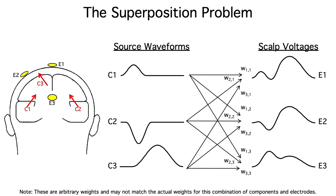As a result, the voltage at any given scalp electrode is simply a weighted sum of the underlying source waveforms. This superposition of multiple ERP components at each electrode site creates real challenges for ERP researchers.